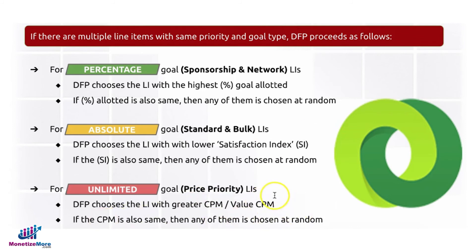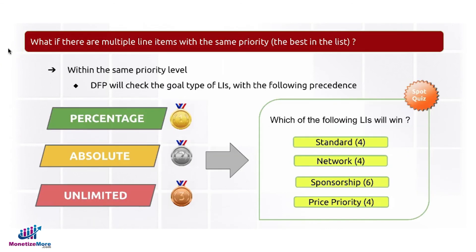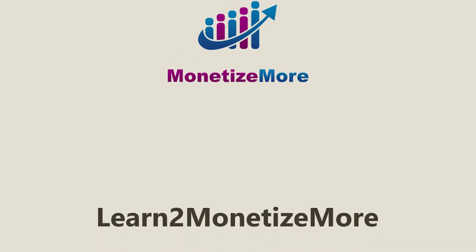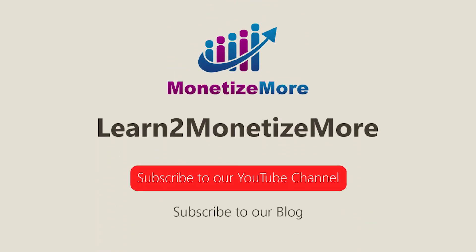Remember this order when checking why your line item type is not serving, or why one line item type is winning instead of another. This is how Google Ad Manager orders priority: first percentage-based line item types, next absolute-based line item types, and lastly unlimited. That's it for today — thanks for joining us. Don't forget to subscribe to our YouTube channel and our blog to learn to monetize more. Hope to see you again soon!